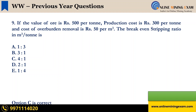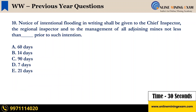Time up. The correct answer is C — 4 is to 1. Next question: Notice of intentional flooding in writing shall be given to the chief inspector, the regional inspector, and to the management of all adjoining mines not less than blank prior to such intention. A. 60 days. B. 14 days. C. 90 days. D. 7 days. E. 21 days. Your time starts now.